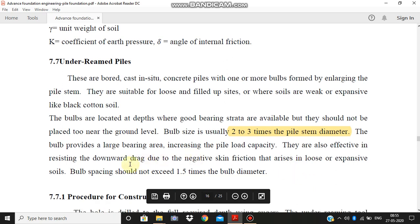They are effective in resisting the downward drag due to negative skin friction that arises in loose or expansive soil. The next important point is bulb spacing should not exceed 1.5 times the bulb diameter. This is one more important point regarding under-reamed piles.